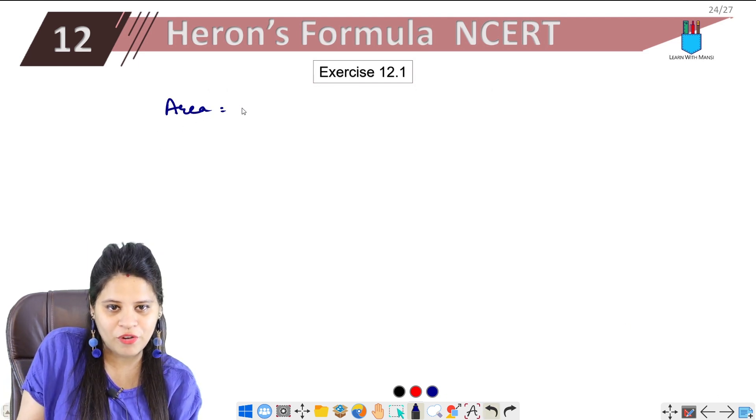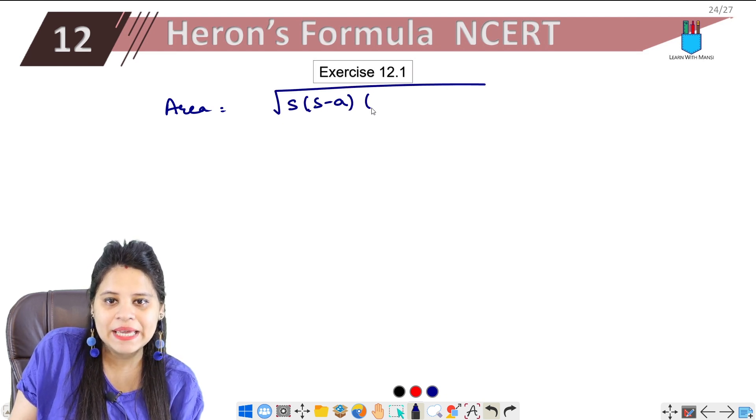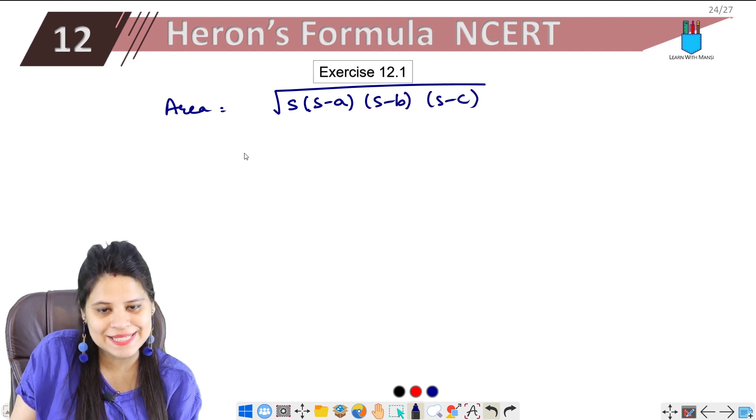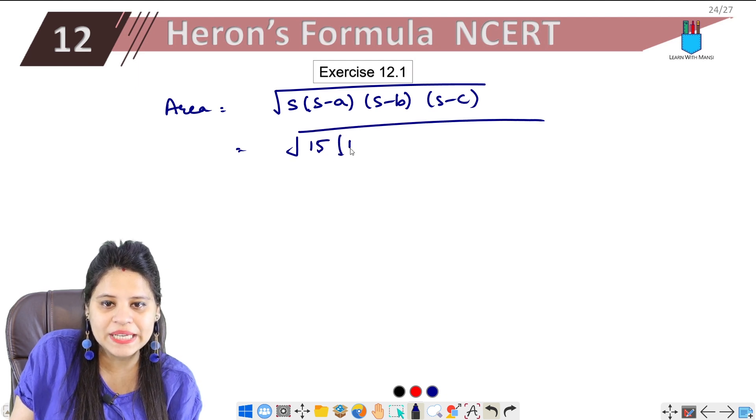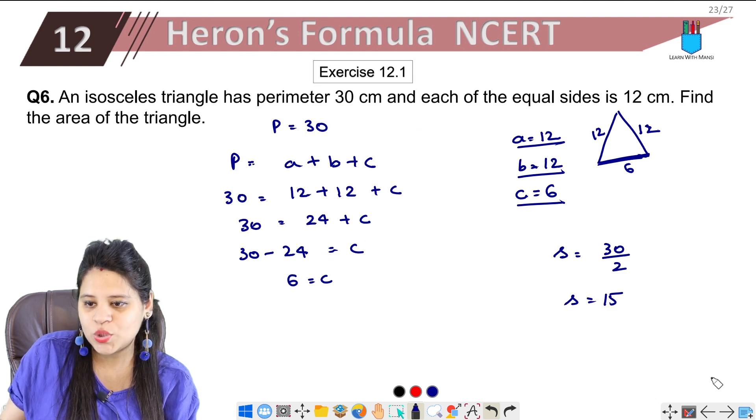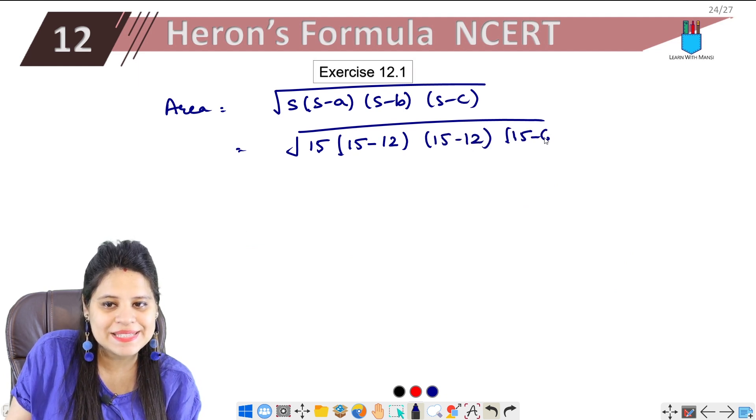Let's write the formula and values. Root of s times s minus a, then s minus b, and then s minus c. Semi-perimeter is 15. 15 minus a is 12, b is again 12, and c is 6.